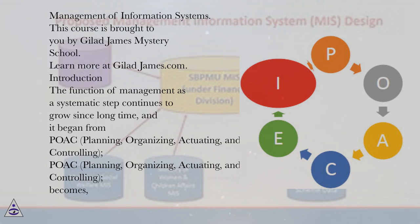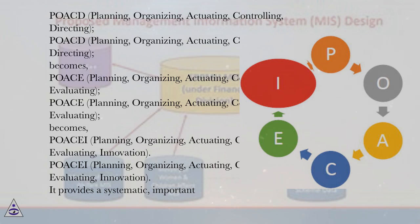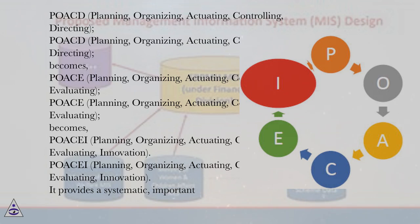Introduction: The function of management as a systematic step continues to grow. It began from POAC — Planning, Organizing, Actuating, and Controlling — and evolved by adding Directing, then Evaluating, becoming POKAY: Planning, Organizing, Actuating, Controlling, Evaluating, and finally Innovation. It provides a systematic, important step forward in order to implement practical management activities.